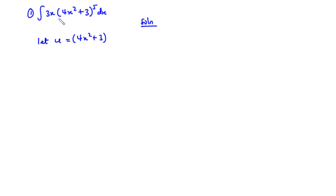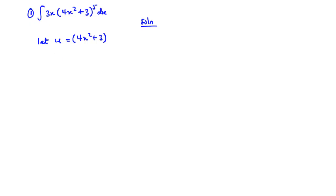You realize that here we have the product of two functions: 3x and then (4x squared plus 3) to the exponent 5. You realize that 4x squared plus 3 looks a bit more complex compared to 3x. So it is wise to make u equal to the complex expression so that when you find the derivative of u with respect to x, you can perform some cancellation and it makes the whole integral simpler and easier to solve.